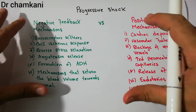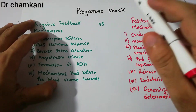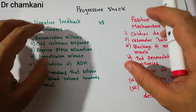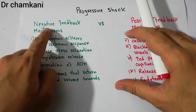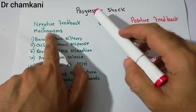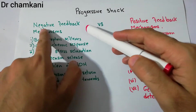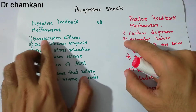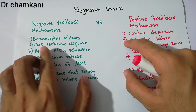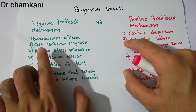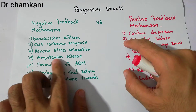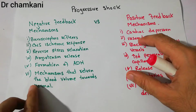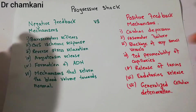Now, not every shock will develop into an irreversible stage, because there are some negative feedback mechanisms as well, which we discussed in the context of non-progressive shock. These include the baroreceptor reflexes, the CNS ischemic response, reverse stress relaxation, and the release of angiotensin and formation of ADH — all those mechanisms which return blood volume towards normal.